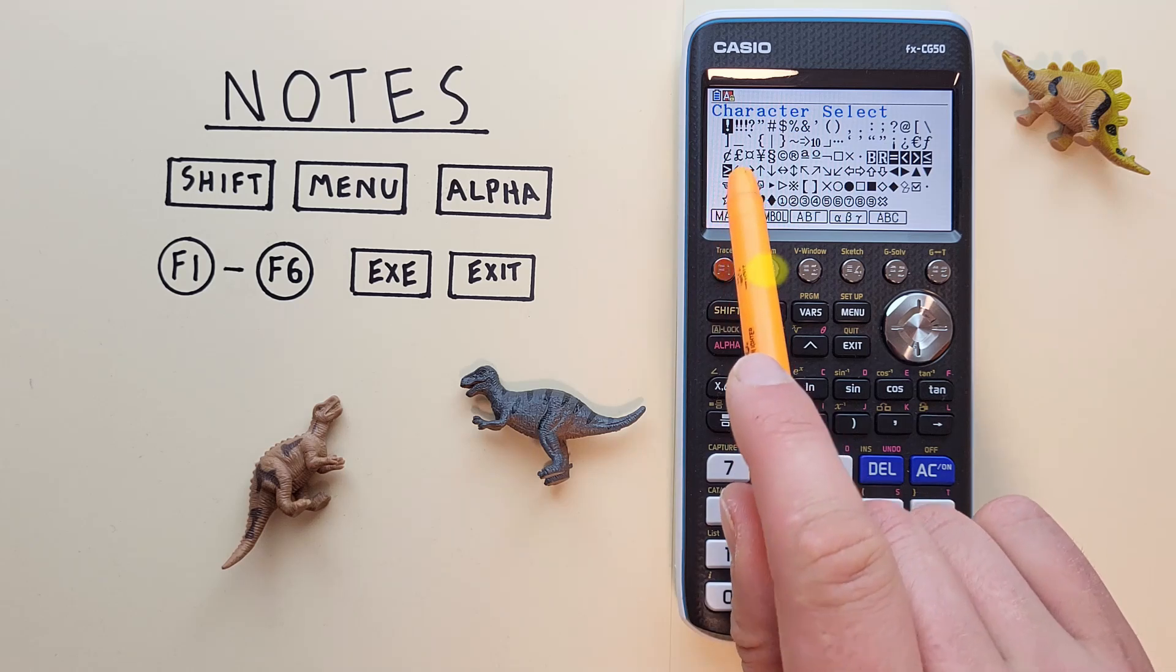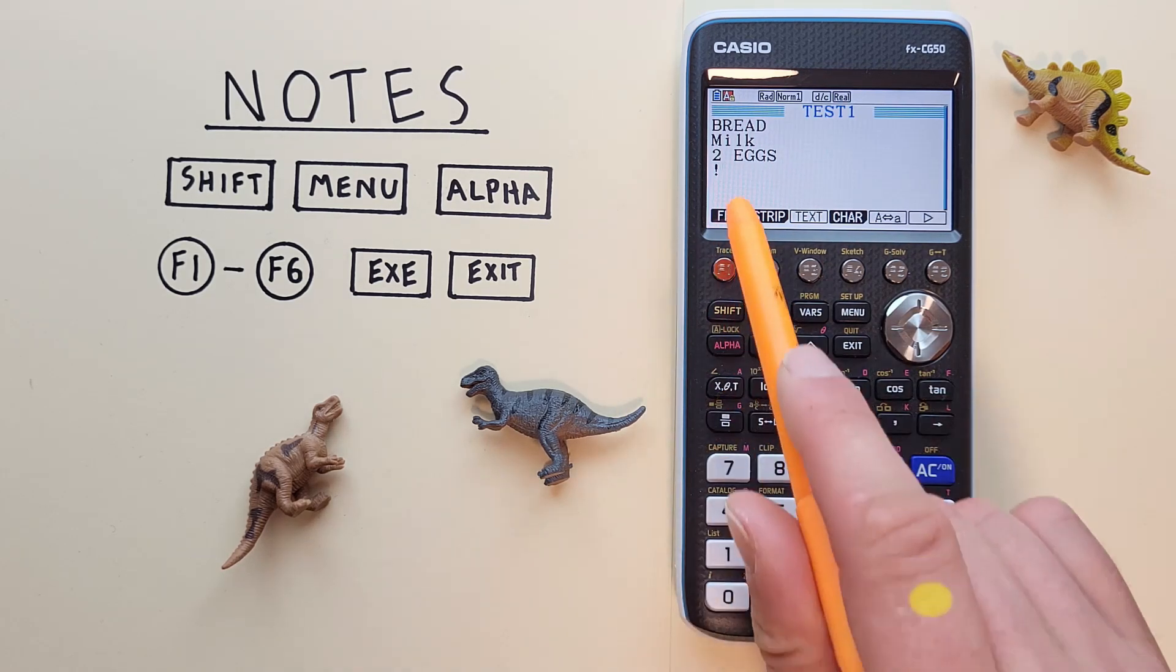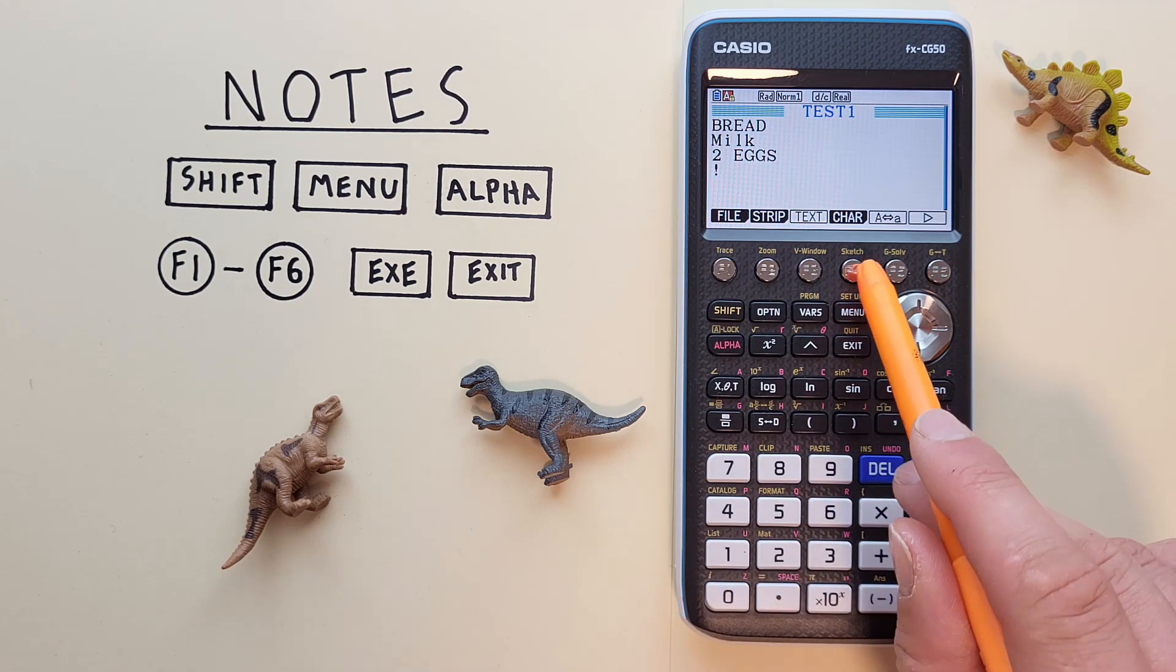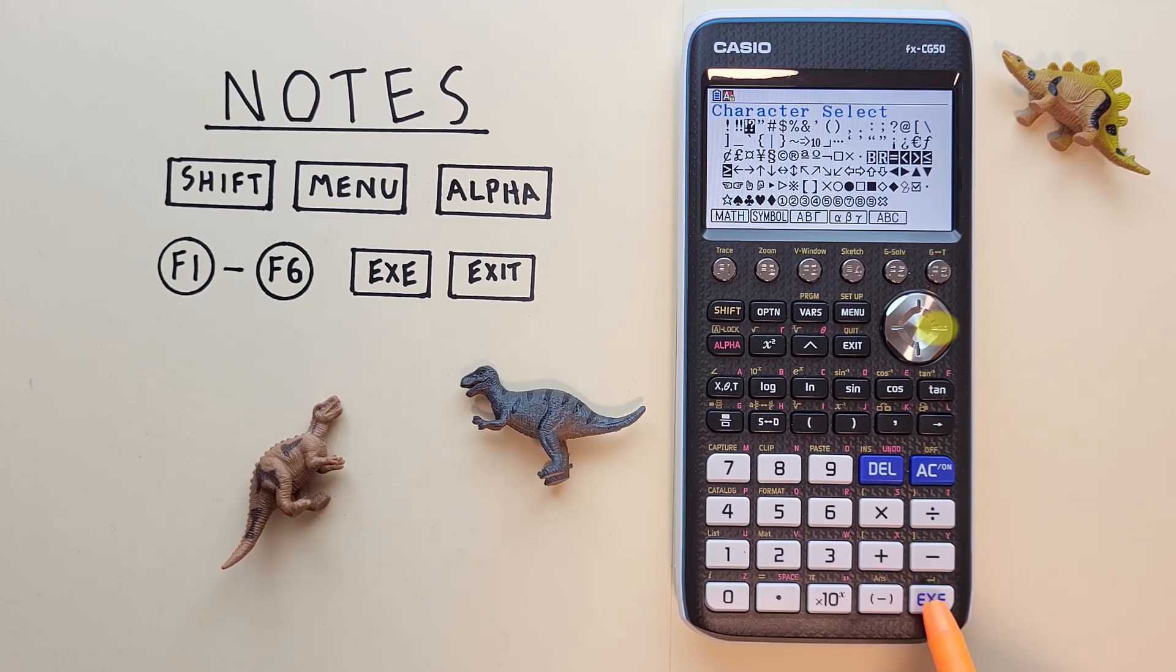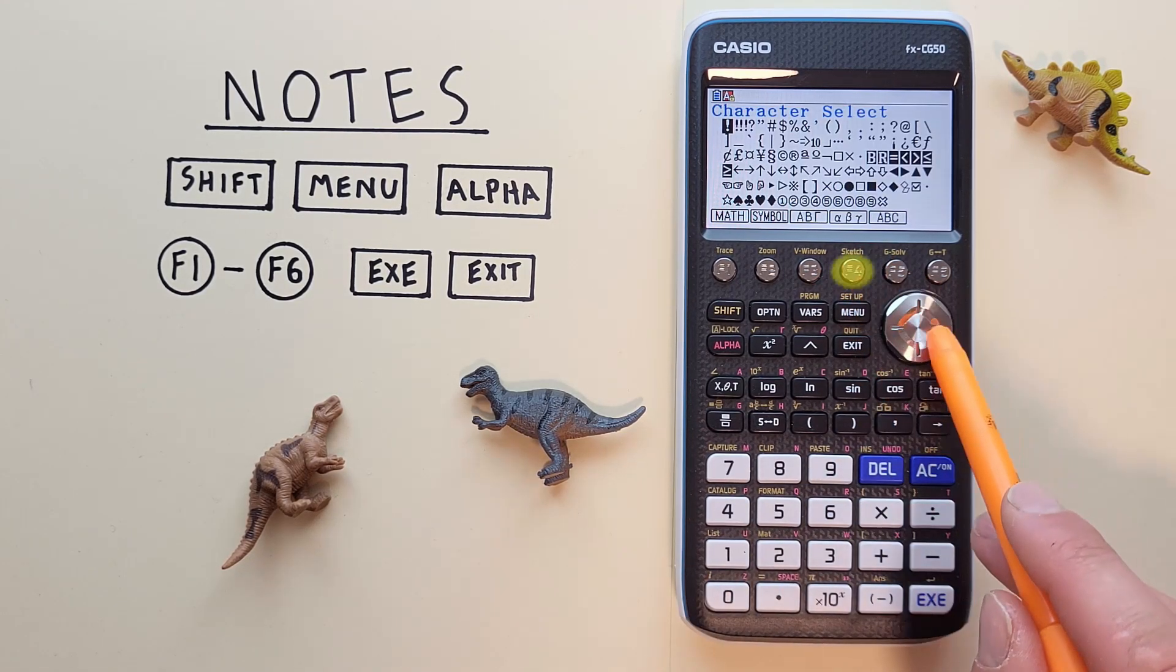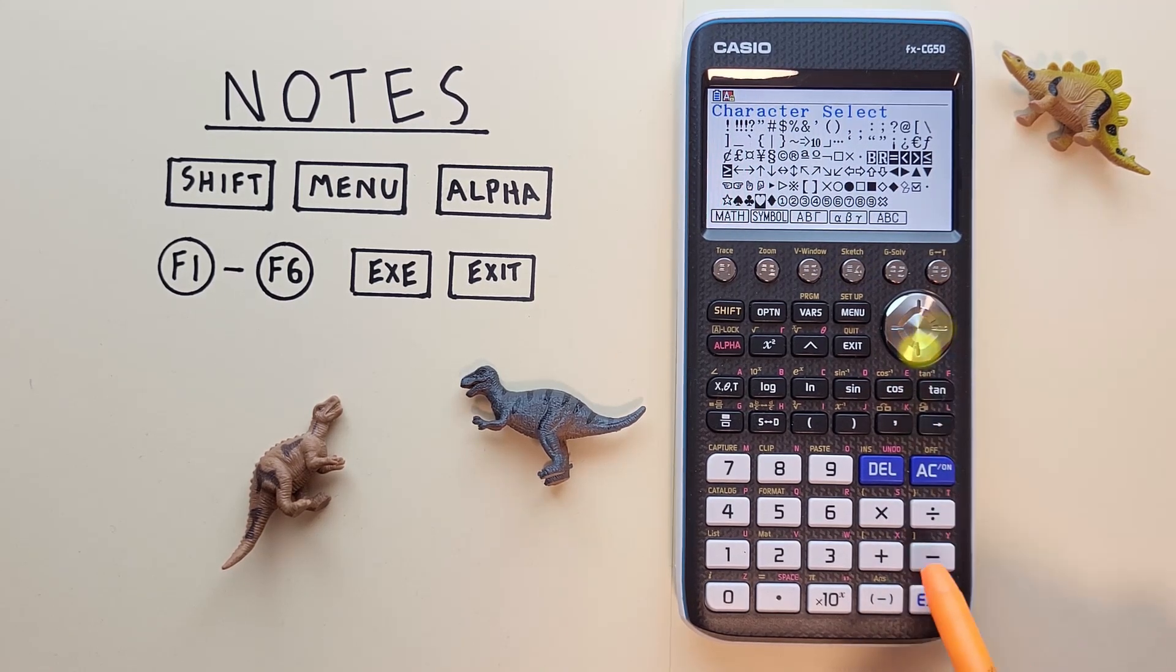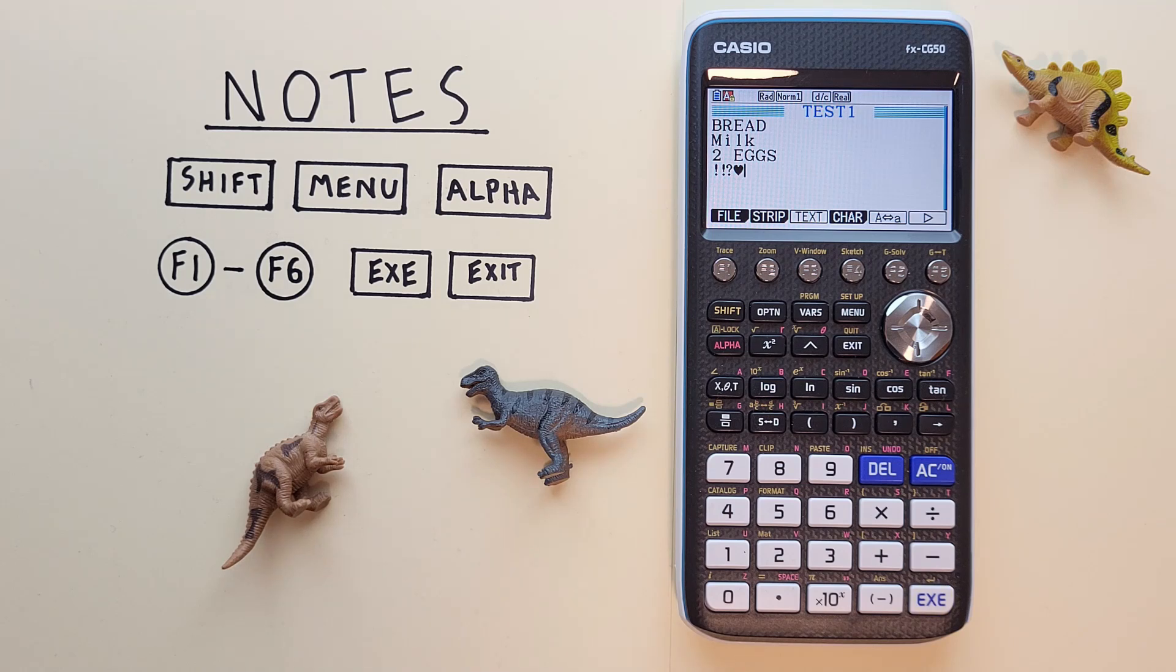So if we want to enter one of these in we just highlight it and hit the exe. We bring that up. There's the number of other characters we can include in our notes.